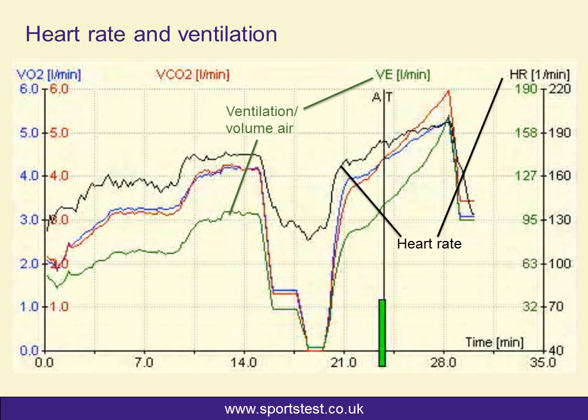I'm also showing here on this graph a total ventilation, which is the volume of air shifted in and out of the lungs in the period of a minute. You can see for this rider, they're shifting towards the end of the max test around about 170, maybe even 180 litres of air every minute. On this graph, which is unique to the set of results that our riders would normally get, I've also put a heart rate profile on here as well, and that will become apparent why that's important later on.